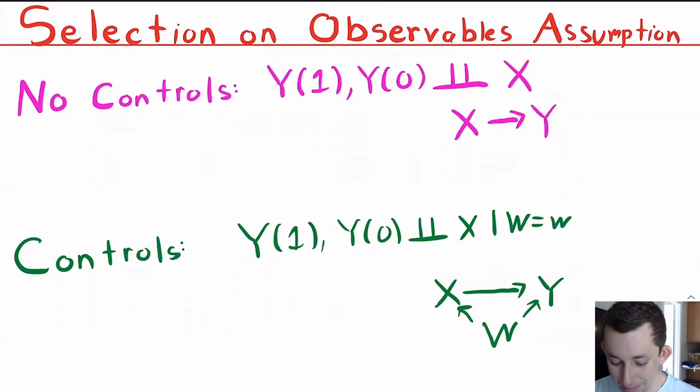And it makes sense that if we need to throw controls, it's going to be a very similar assumption just with controls or conditional on controls. So in green here, we have that same assumption, that selection on observables assumption with controls. So it says that your potential outcomes are independent of X given or conditional on the value of your confounder, the value of controls, the value of what we'll call W is equal to some value little w. And again, that's just coming back to this picture here.